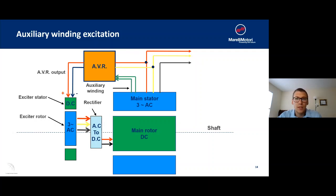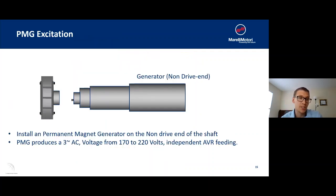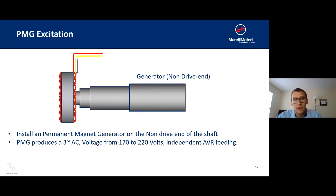Another type of excitation we're going to be looking at is PMG excitation systems. A PMG excitation system is when you install a small permanent magnet generator onto the non-drive end of the shaft. This PMG produces a three-phase AC voltage anywhere between 170-220 volts depending on which one you get. And it's going to feed the AVR independent of the rest of the system.